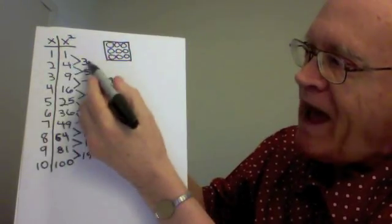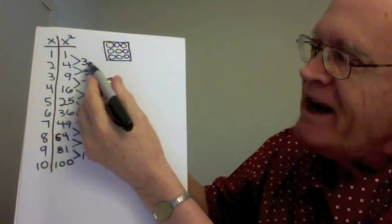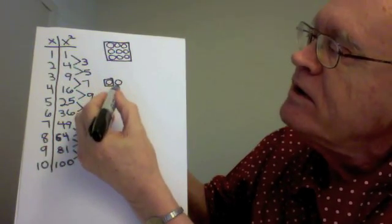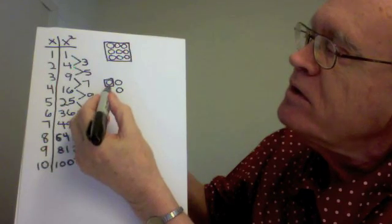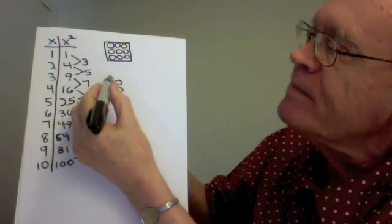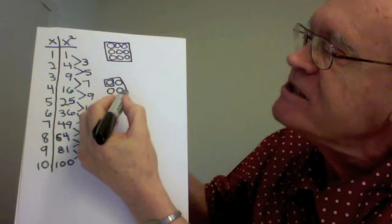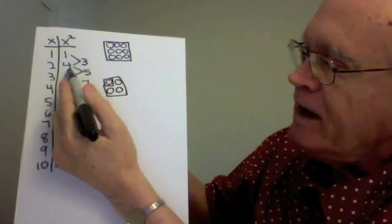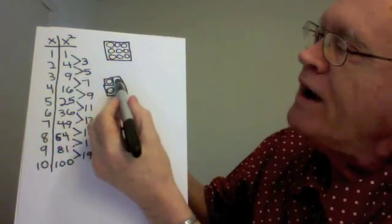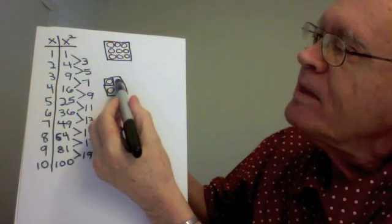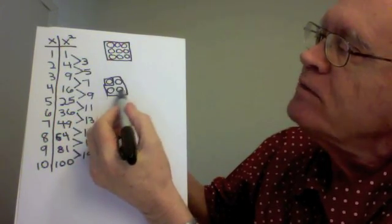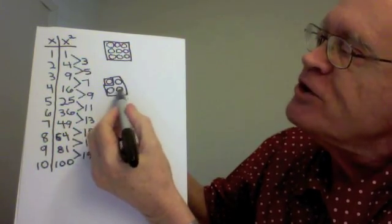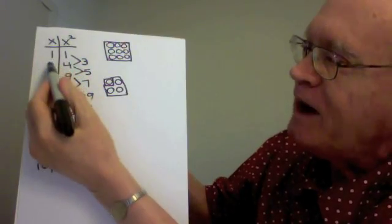I will add three marbles in an L shape to get the next square number. One, two, three. That gives us the next square number, four. And the three that I added are one plus two. The one not including the corner, the two including the corner. One plus two is three.